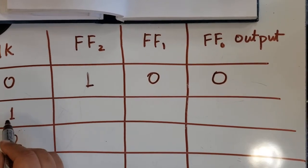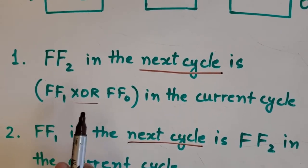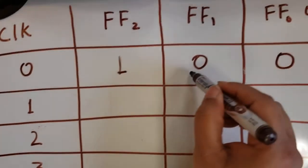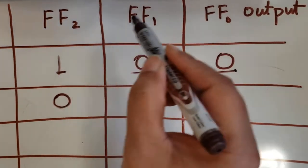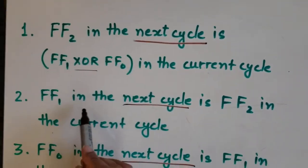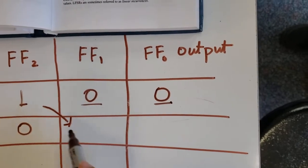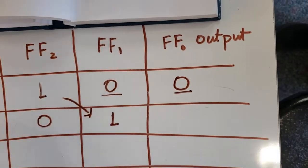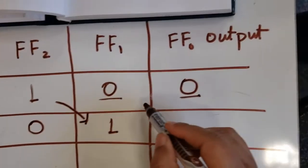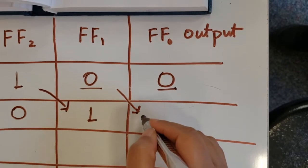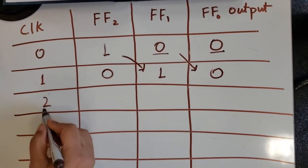For clock cycle 1, using the first rule, FF2 in the next cycle is FF1 XOR FF0, which gives 0. By the second rule, FF1 in the next cycle is FF2 in the current cycle, so FF2's current value moves to FF1. By the third rule, FF0 in the next cycle is FF1 in the current cycle, so FF1's value of 0 moves to FF0.